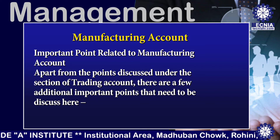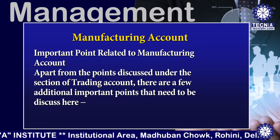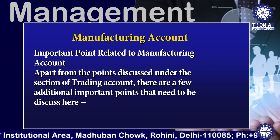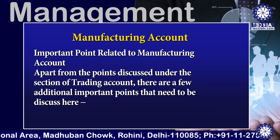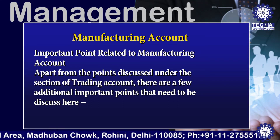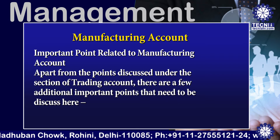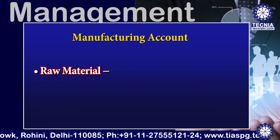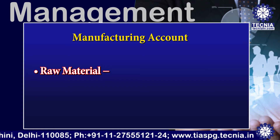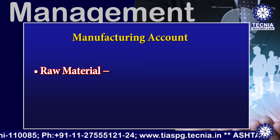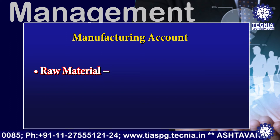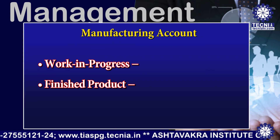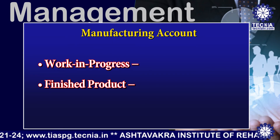The cost of production is transferred to the trading account to calculate the gross profit of the business. Let me discuss different important points related to the manufacturing account. Apart from the points discussed under the section of trading account, there are a few additional important points to discuss. The first one is raw material. Raw material is used to produce a product, and there may be opening stock, purchases, and closing stock of raw material.